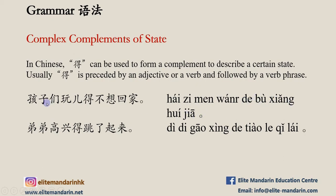Example sentence: 孩子们玩得不想回家。 孩子 means 'children,' 想 means 'to want.' Meaning: 'The children are having so much fun they don't want to go home.' Another example: 弟弟高兴地跳了起来。 高兴 means 'happy,' 跳 means 'jump.' Meaning: 'The younger brother jumped up happily.'